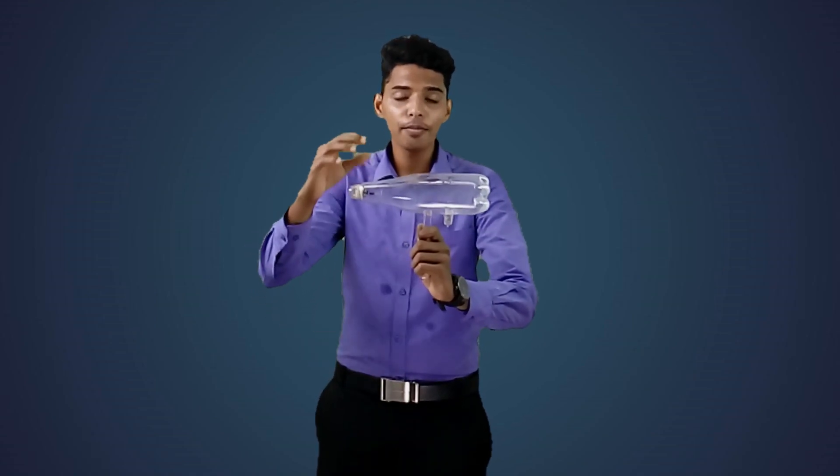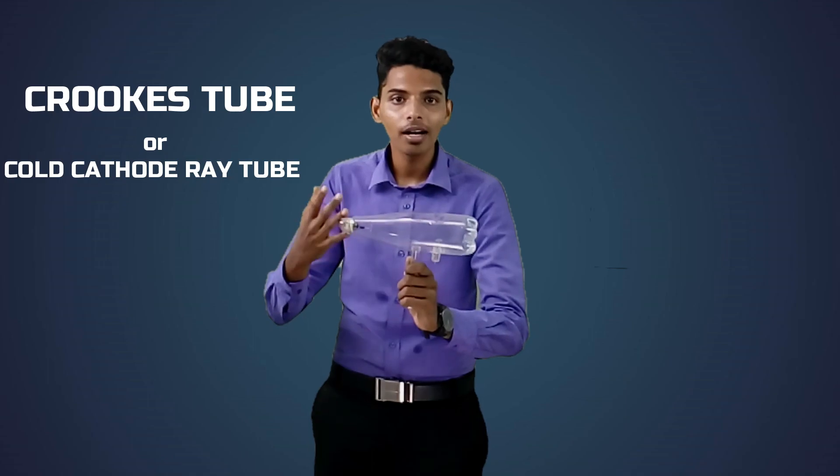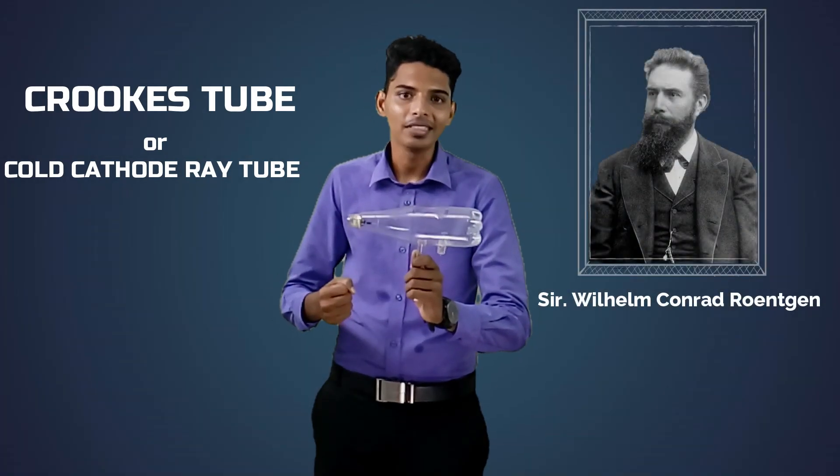This is the model of the cold cathode ray tube. The original name for this tube is the Crookes tube. Since this tube works under the cold process principle, we can also call it the cold cathode ray tube. X-rays were first discovered using this tube by Sir Wilhelm Conrad Röntgen.